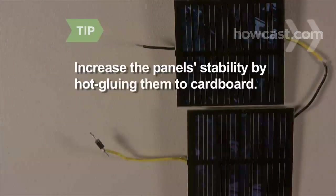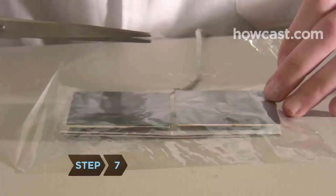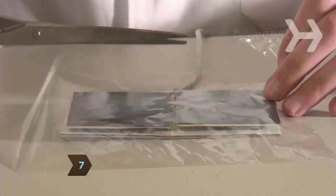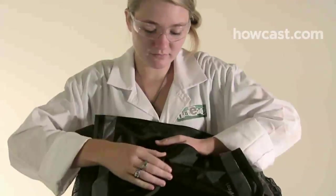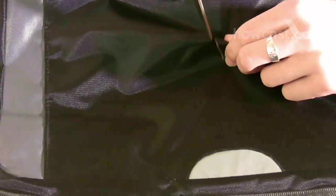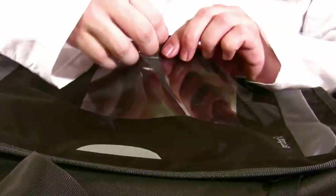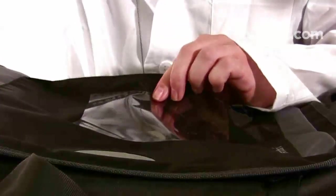To increase the stability of the solar panels, hot glue them to a piece of cardboard. Step 7. Cut out a piece of clear plastic vinyl slightly larger than the size of the panels to act as a sleeve. Find a spot on your bag for the solar panels. Cut a small hole in the bag to fit the USB cord through, and then sew three sides of the vinyl plastic to the bag, directly over the small hole.